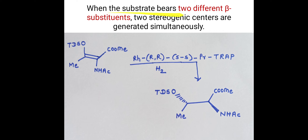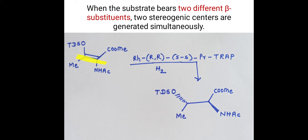When the substrate bears two different beta-substituents, two stereogenic centers are generated simultaneously. In the first example, the beta-carbon has two different substituents: O-TDS and methyl. The catalyst is rhodium-RRSS-propyl TRAP. Hydrogen gets added across the carbon-carbon double bond, and due to the presence of two different substituents, two stereogenic centers or chiral centers are generated simultaneously — both these carbons become chiral. This occurs whenever two different beta-substituents are present. In the second example, at the beta-carbon, there are again two different substituents, and the same rhodium-RRSS-propyl TRAP catalyst is used — hydrogenation takes place and two chiral centers are formed.